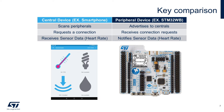The peripheral advertises BLE packets so that the central device can scan the peripheral device. While advertising, the peripheral receives connection requests from the central devices. After the connection is established, the peripheral is ready to send and notify various data to the connected central device.